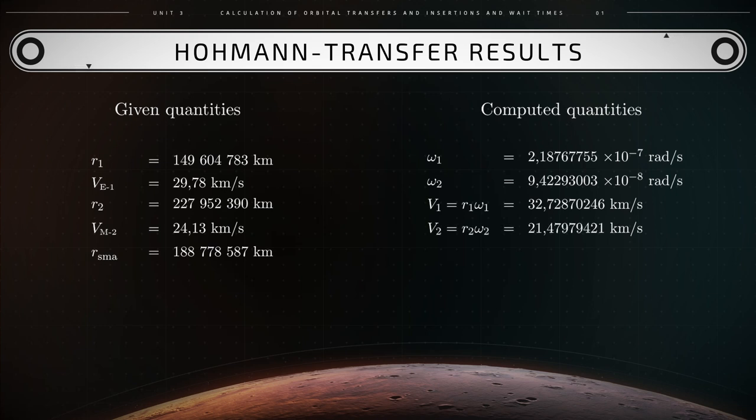V2 is obtained as R2 times Omega 2. That equals 21.479 km per second. This is the velocity of the spacecraft upon arrival in the vicinity of Mars. We observe that V1 is greater than VE1 and V2 is less than VM2.